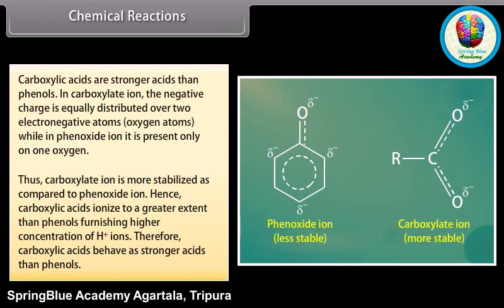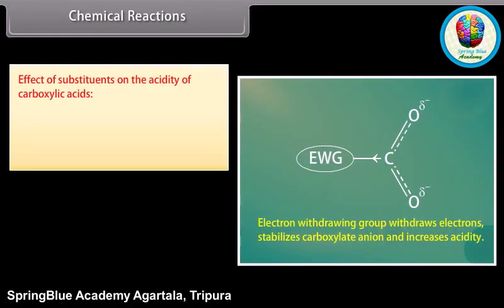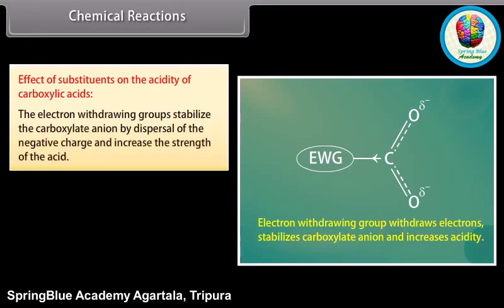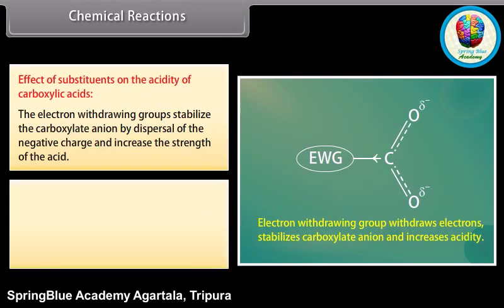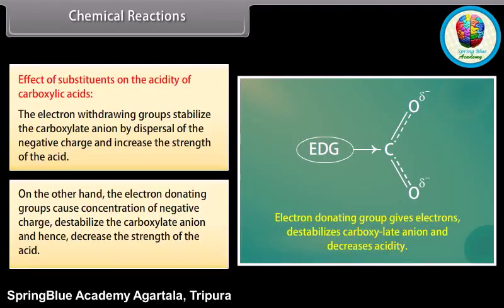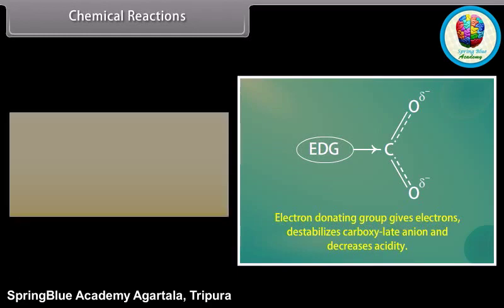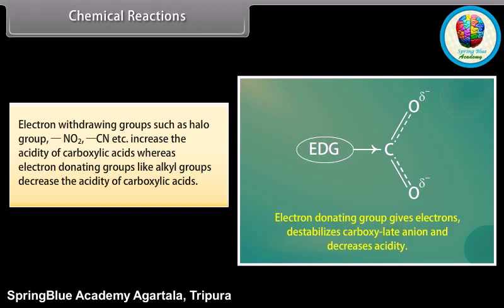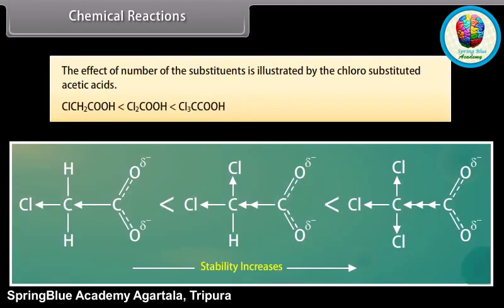Effect of substituents on the acidity of carboxylic acids: electron-withdrawing groups stabilize the carboxylate ion by dispersal of the negative charge and increase the strength of the acid. On the other hand, electron-donating groups cause concentration of negative charge, destabilize the carboxylate anion, and hence decrease the strength of the acid. Electron-withdrawing groups such as halo group, NO2, CN, etc., increase the acidity of carboxylic acids, whereas electron-donating groups like alkyl groups decrease the acidity. The effect of number of substituents is illustrated by the chloro-substituted acetic acids: the acid strength increases from chloroacetic acid to trichloroacetic acid.